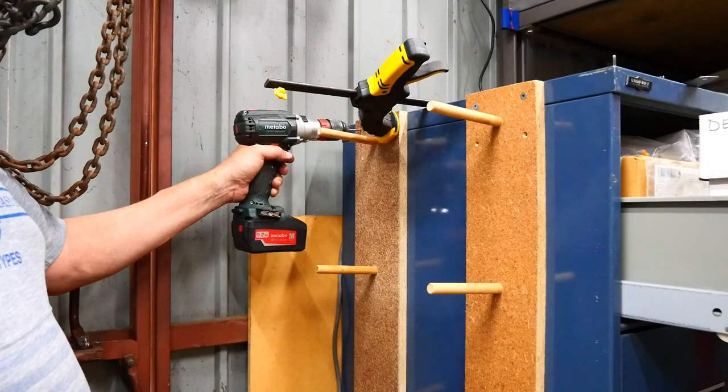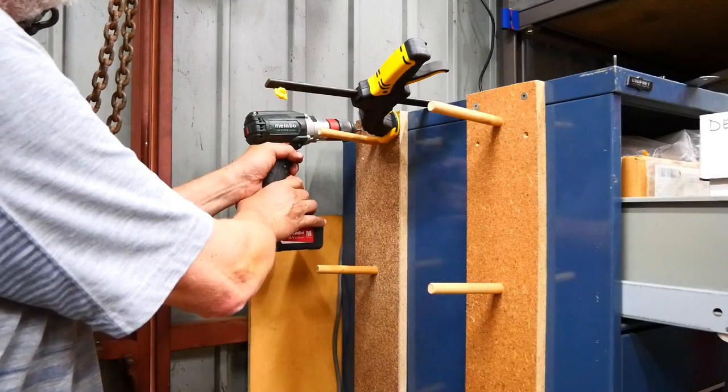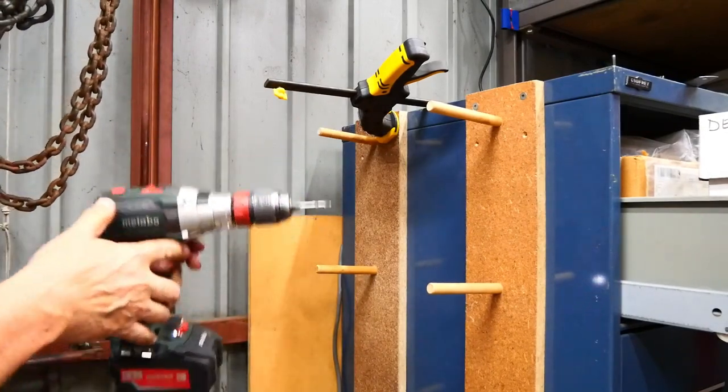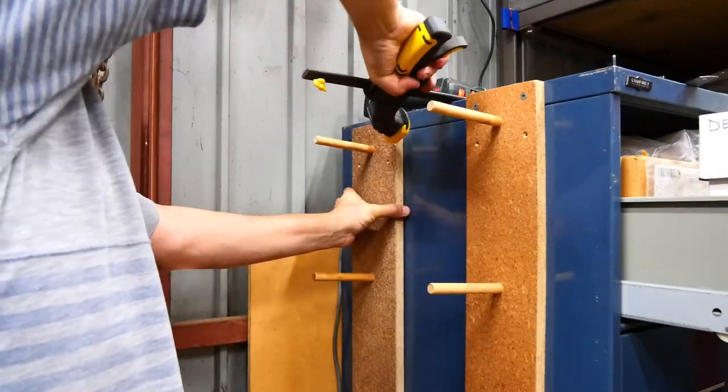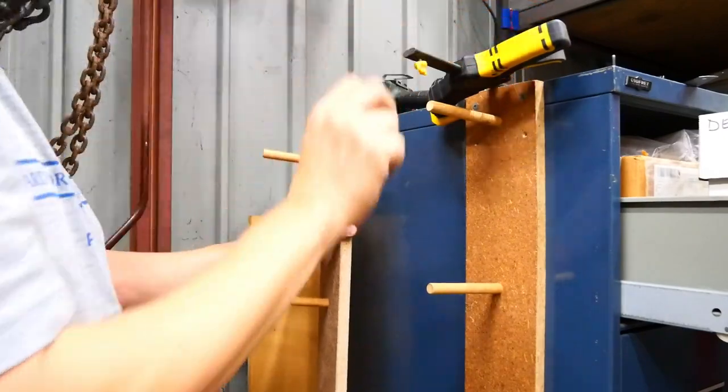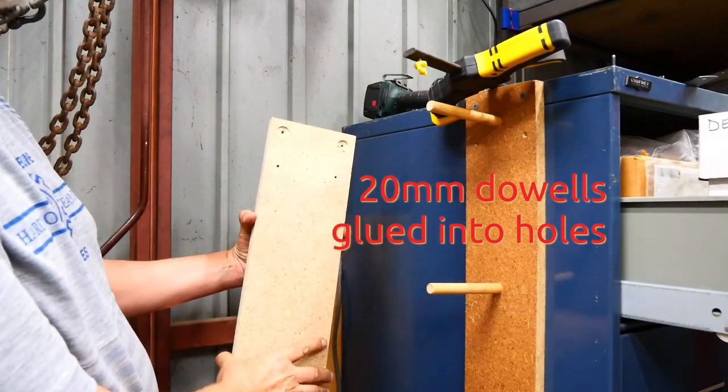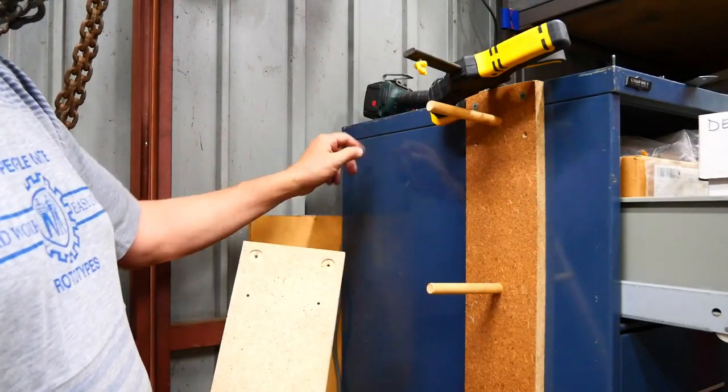This is a quick video to share another storage idea. This is going to be for hanging short rolls of stuff on, and I'm using rib nuts. I'll drill that out to nine millimeters.